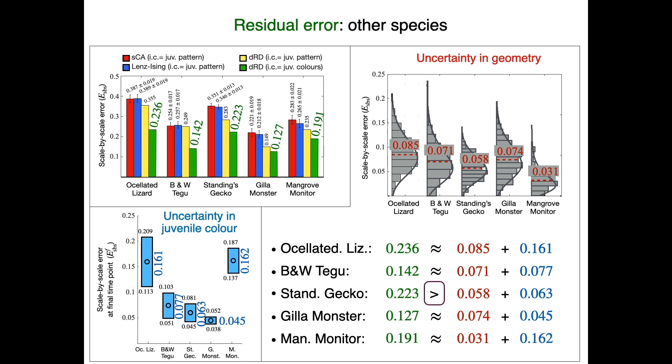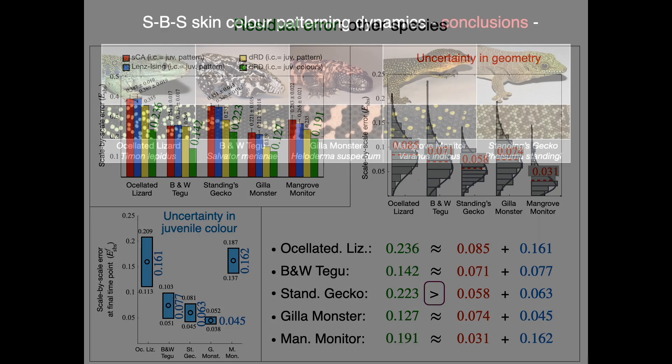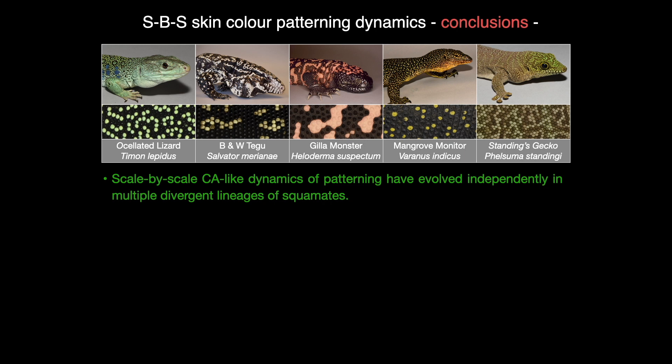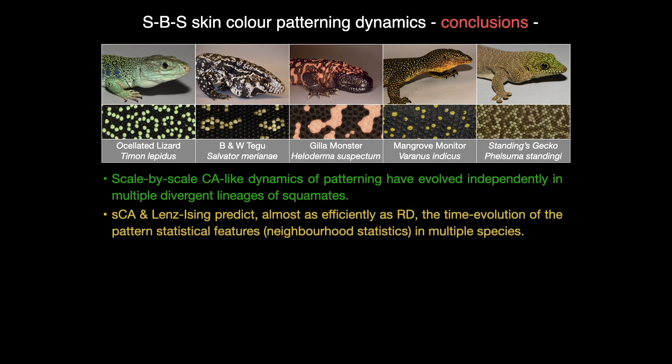The exception of the gecko is discussed in the original article. To sum up, our study yields four major conclusions. First, cellular automaton dynamics have evolved independently in multiple lineages. Second, simple statistical models predict almost as efficiently as reaction diffusion, the time evolution of pattern statistics.